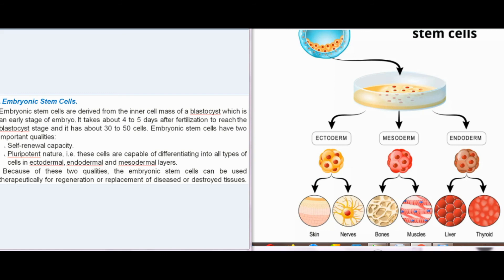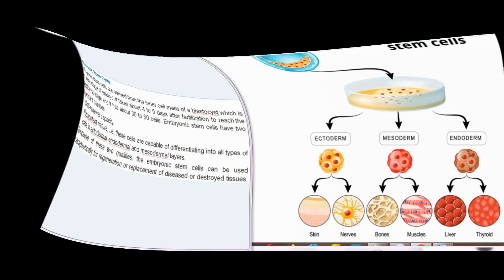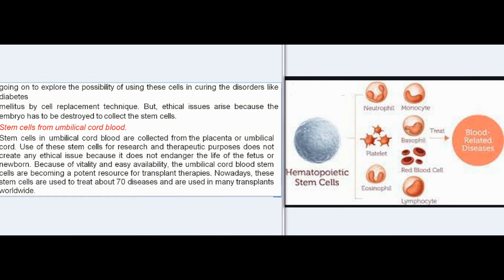Because of their qualities, embryonic stem cells can be used therapeutically for regeneration or replacement of diseased or destroyed tissues. Embryonic pluripotent stem cells are now cultured and research is ongoing to explore their use in treating disorders like diabetes mellitus by cell replacement technique. However, ethical issues arise because the embryo has to be destroyed to collect stem cells. Stem cells from umbilical cord blood are collected from the placenta or umbilical cord — their use does not create ethical issues as it does not endanger the life of the fetus or newborn. These are becoming a potent resource for transplant therapies and are used to treat about 70 diseases worldwide.